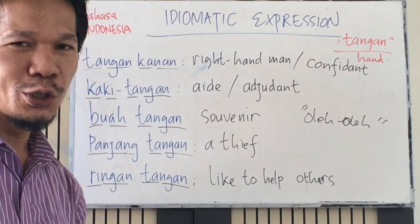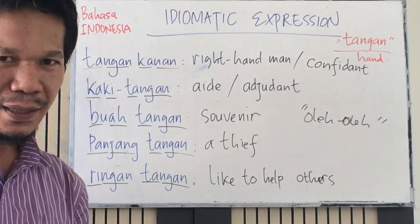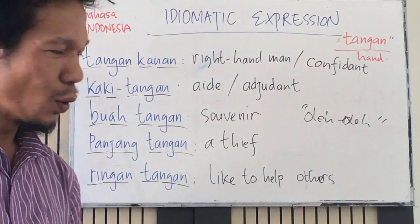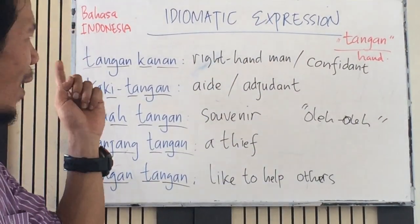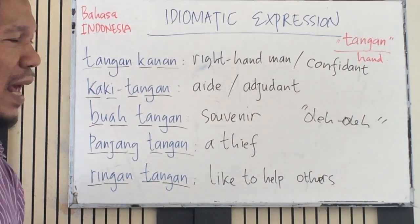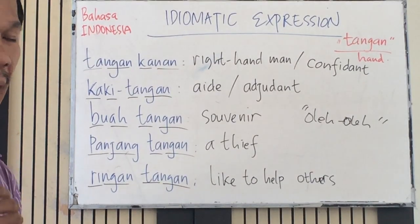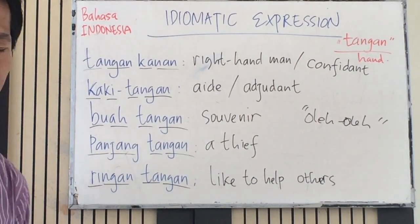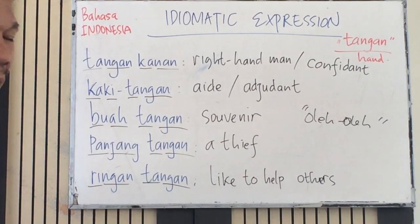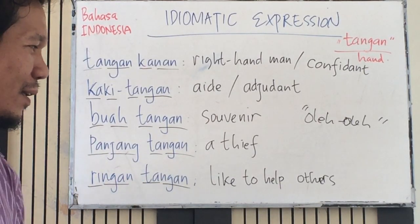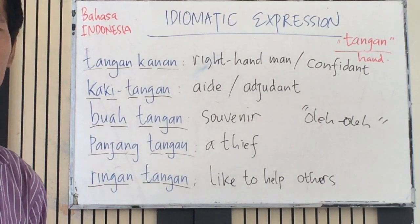'Ringan tangan' literally translates to 'light hand,' and it describes someone who likes to help others — you could say a generous person. Let's review: tangan kanan means right-hand man or confidant; kaki tangan means aide or adjutant; buah tangan means souvenirs; panjang tangan means a thief; ringan tangan means a person who likes to help others.